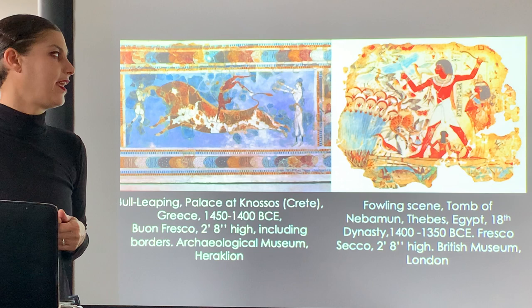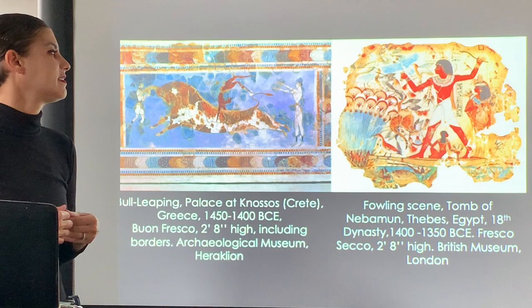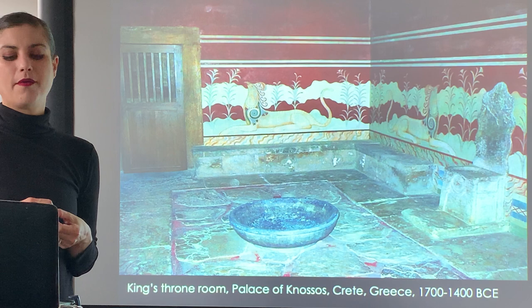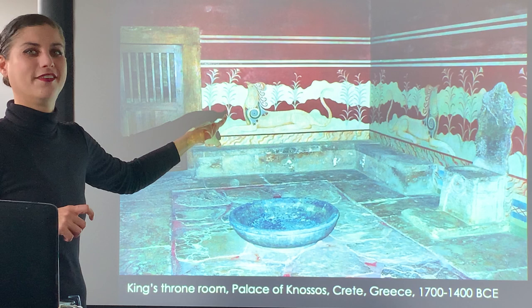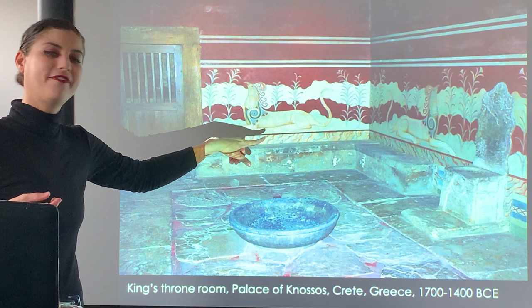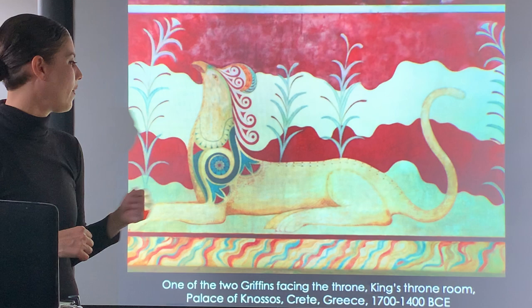Both civilizations use architectural elements and natural elements in their designs, and both use hierarchical scale. Looking at the king's throne room in the Palace of Knossos, you see a beautiful sense of light on dark, dark on light, switching to give simultaneous contrast. Some foliage and landscape are present, but we see more hybrid creatures - a griffin (half lion, half bird) - facing the throne room with quite a bit of stylized detail.